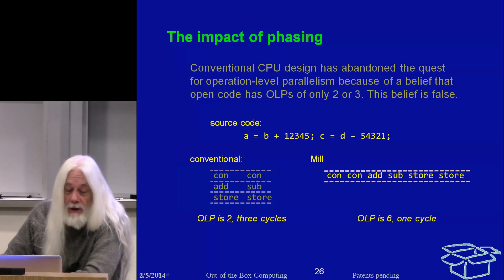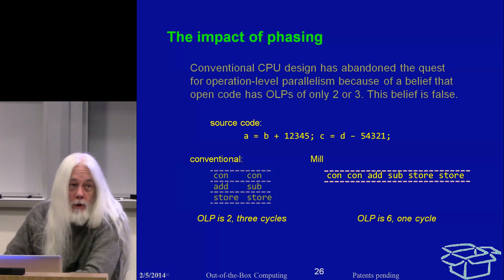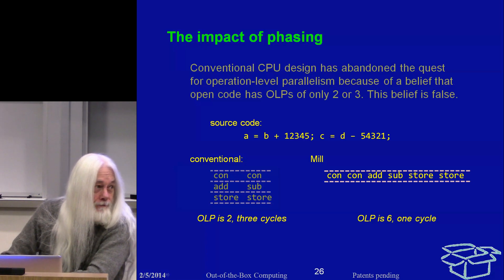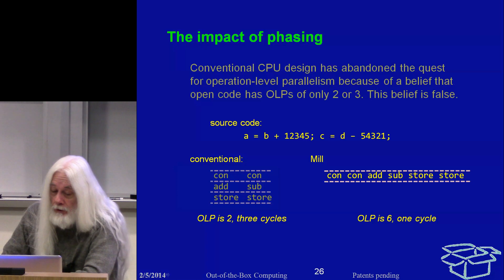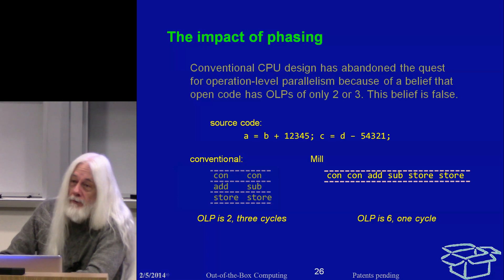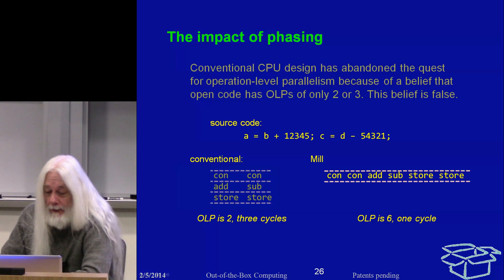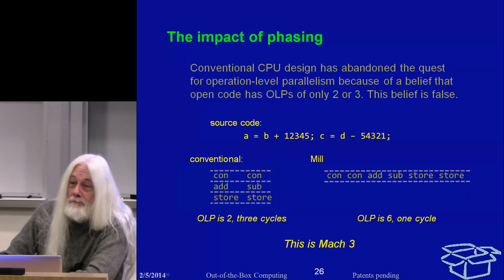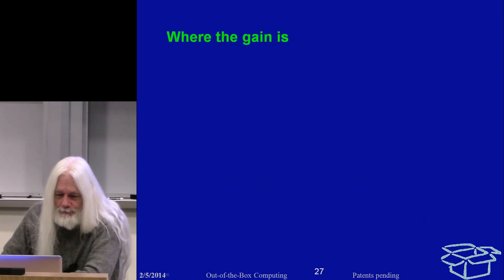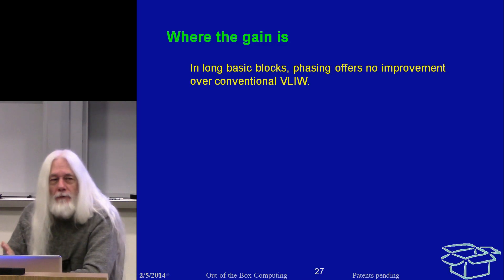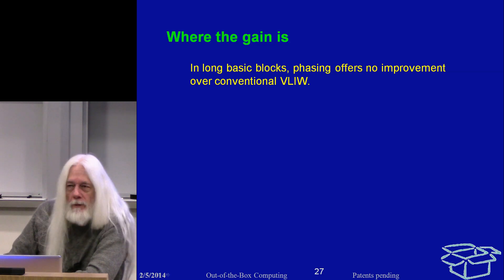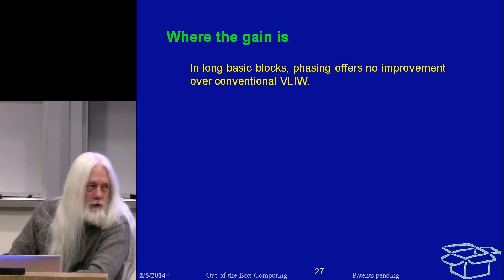Why? Because the const, the add, and the store can all be done in one instruction on the Mill, and because the Mill is very wide, it has no problem doing a six-wide instruction. We have effectively tripled our operation-level parallelism. We call it Mach 3. However, if what you have is a very long basic block and you're concerned about operations in the middle of it, the Mill's phasing offers no advantage over a conventional VLIW.